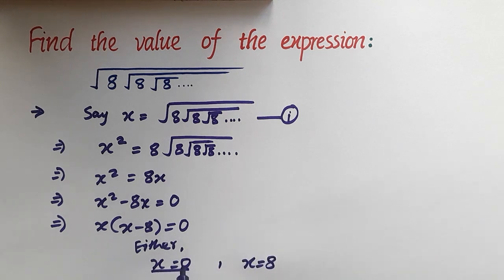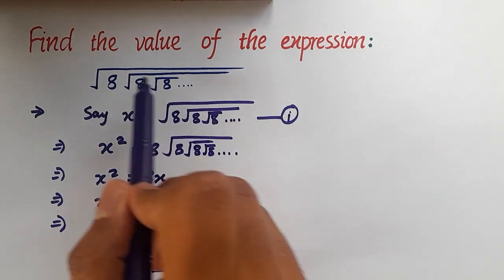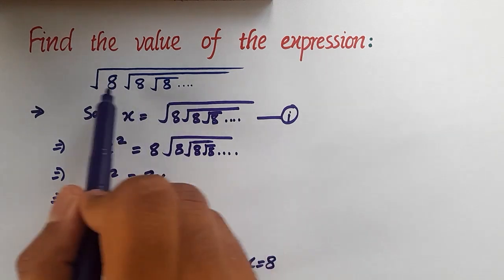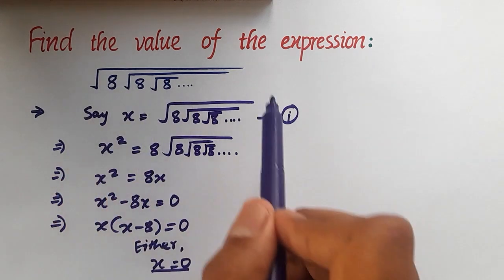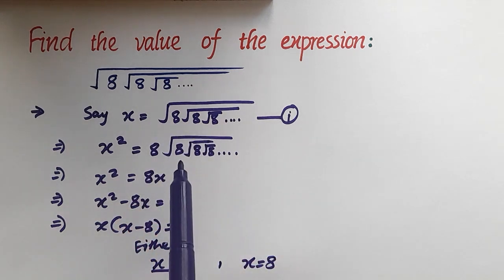x is equal to 0 cannot be the possible solution here, because this value does not contain a 0 inside the root. This number 8 is greater than 0, so whatever the value is, it should be greater than 0. The solution must be greater than 0, so x is equal to 0 will be eliminated.